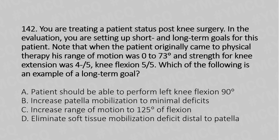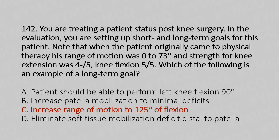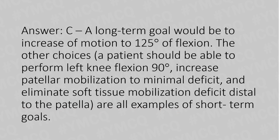And the answer is Option C: Increase range of motion to 125 degrees of flexion. Explanation: A long-term goal would be to increase the motion to 125 degrees of flexion. The other choices — patient should be able to perform left knee flexion, increase patella mobilization to minimal deficit, and eliminate soft tissue mobilization deficit distal to the patella — are all examples of short-term goals.